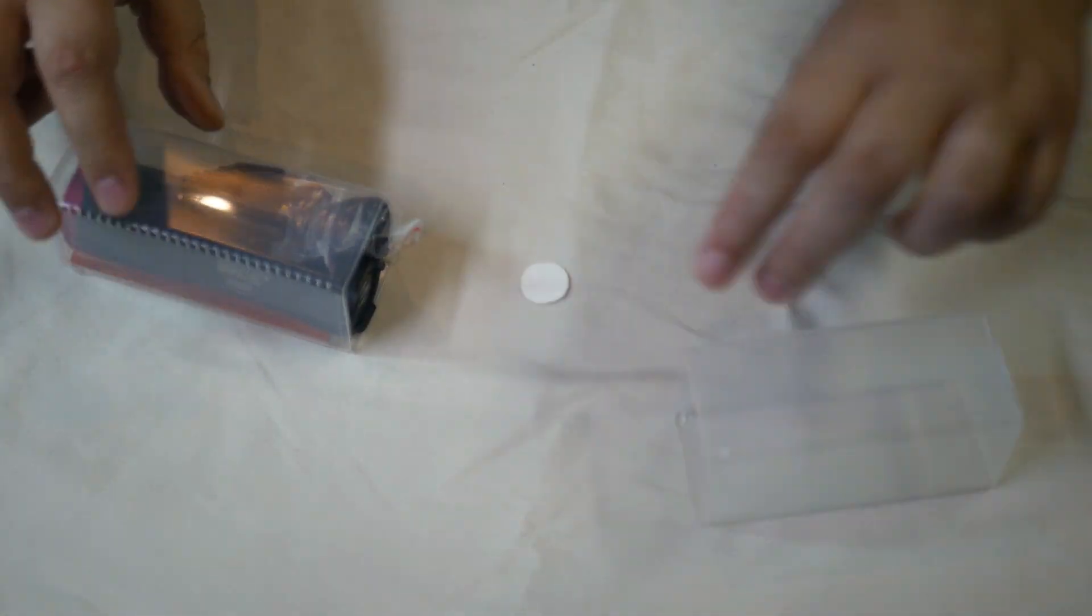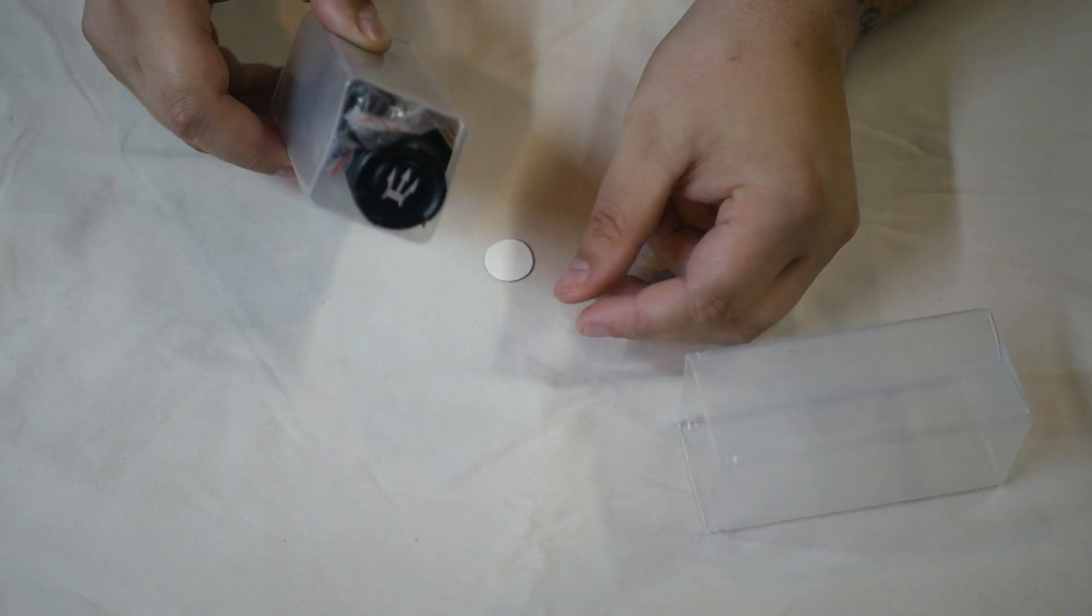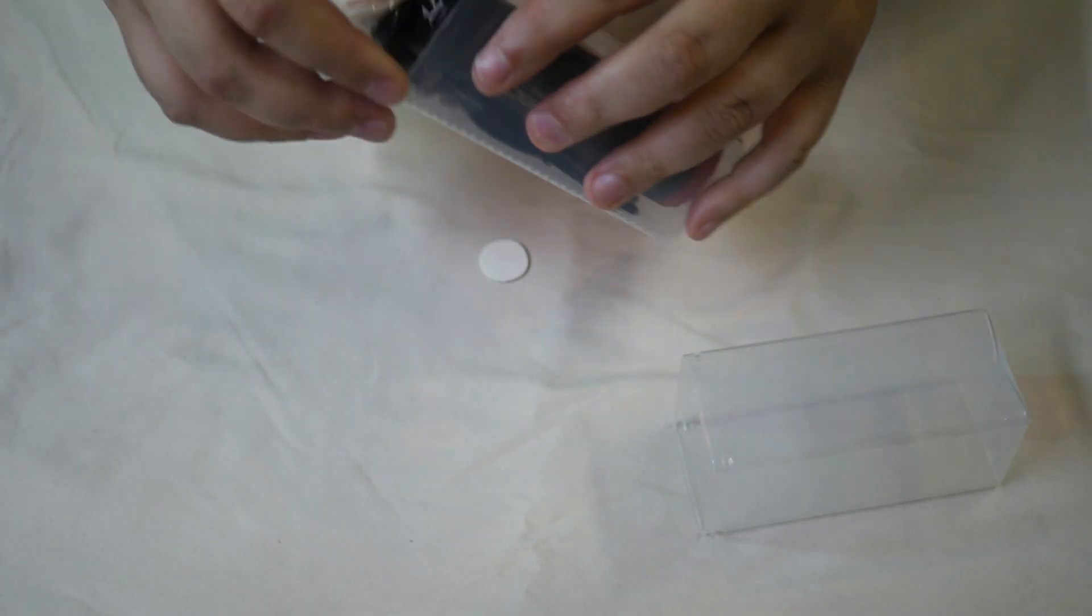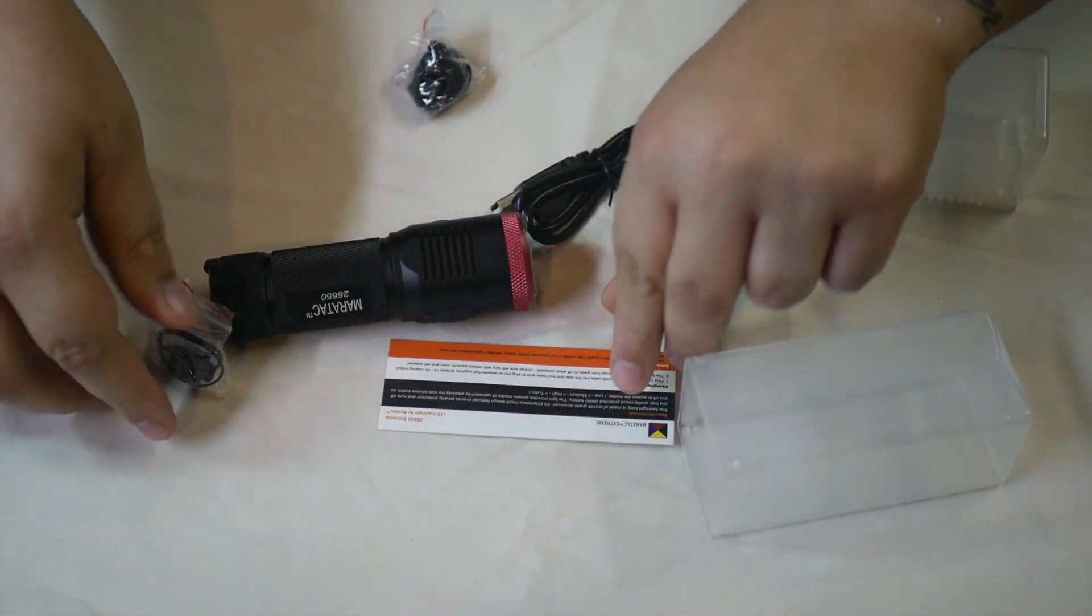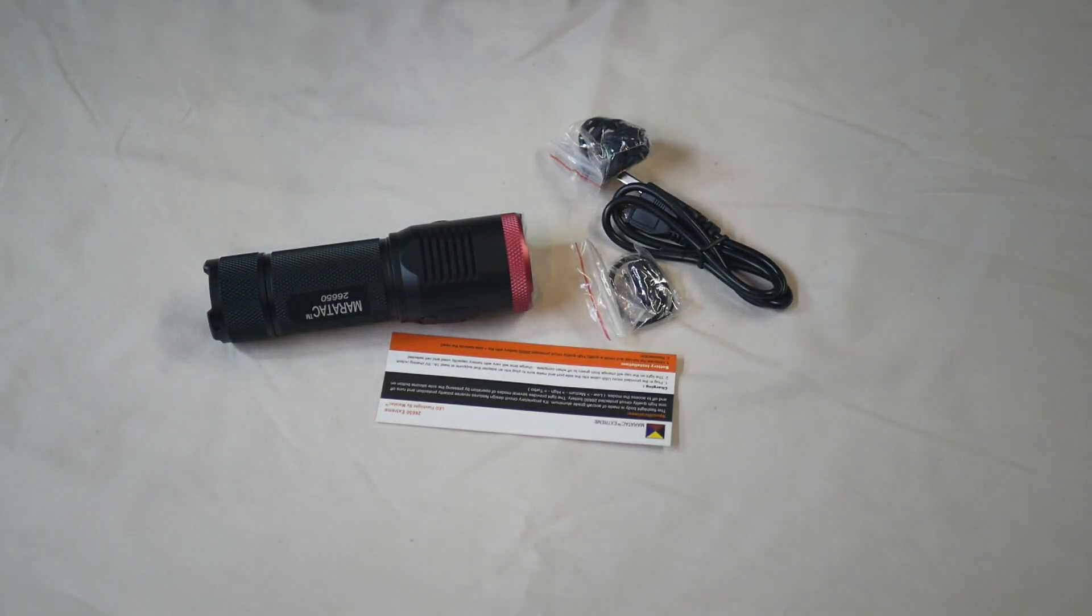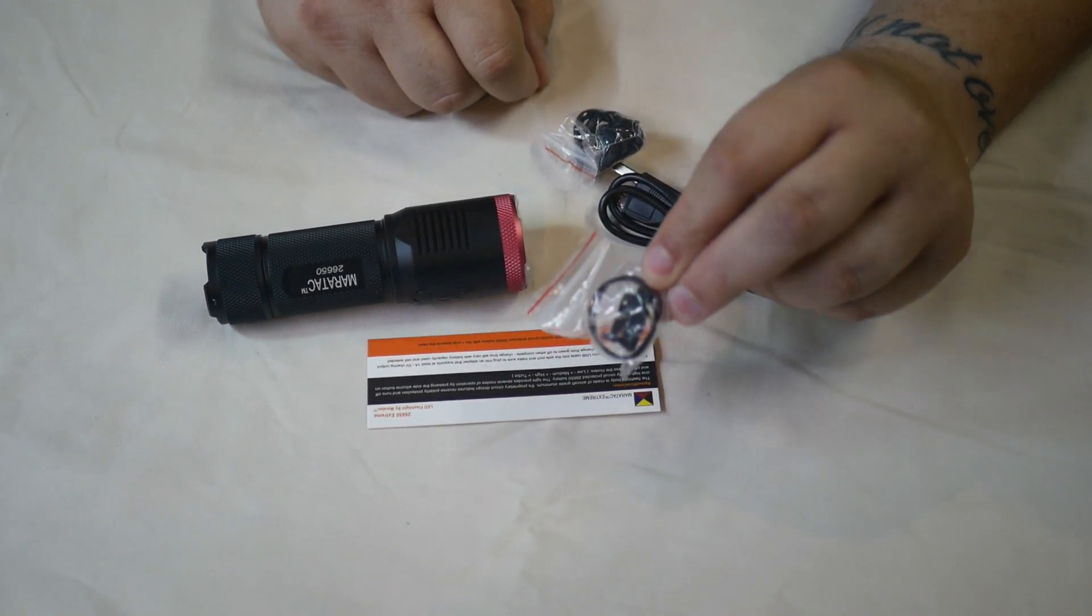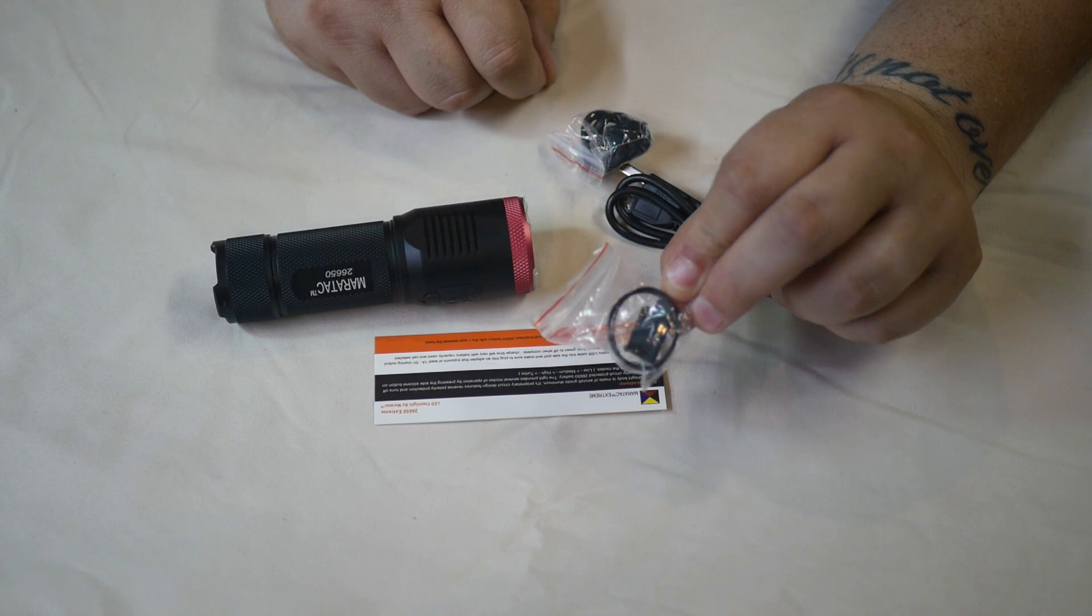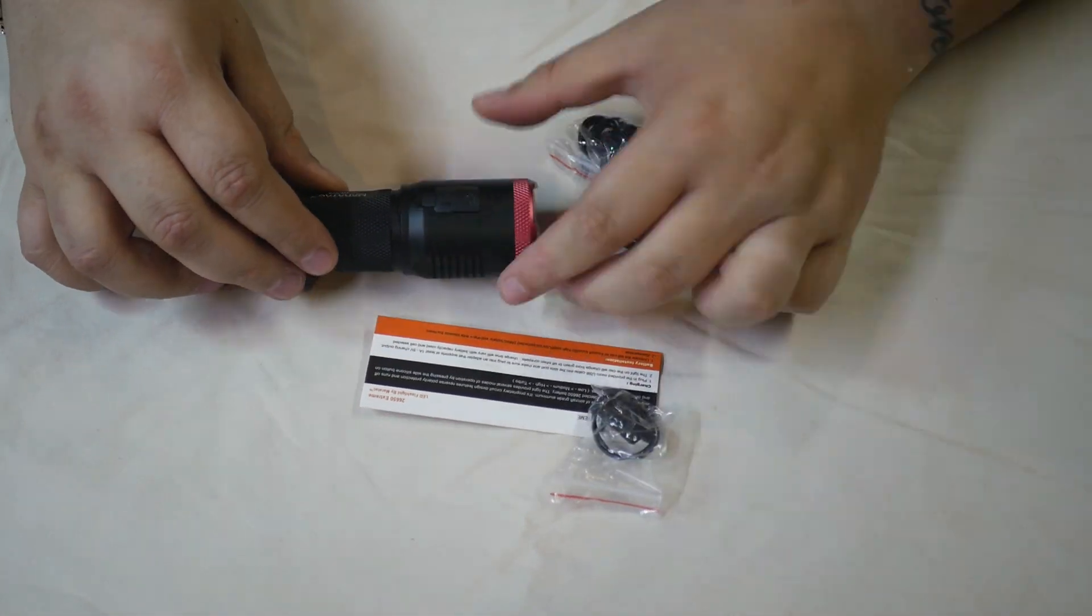Okay, it comes with this little reflector-type dot that you can put on the back here. Interesting. Let's get everything out. All right, it comes with a bag of rubber o-rings and another little door. This light actually has charging built into it, so you don't need a separate charger for the battery.